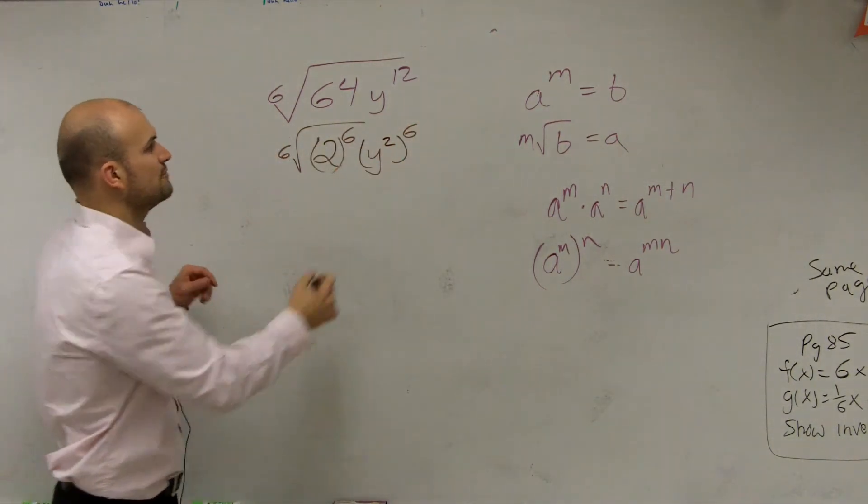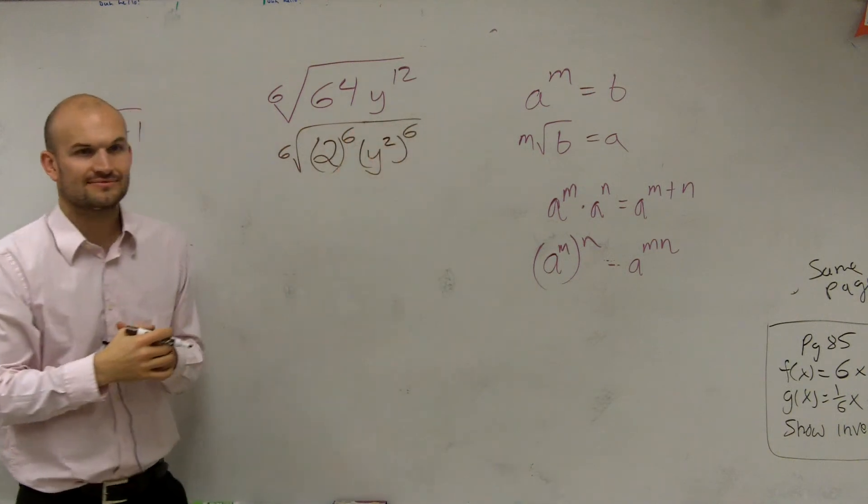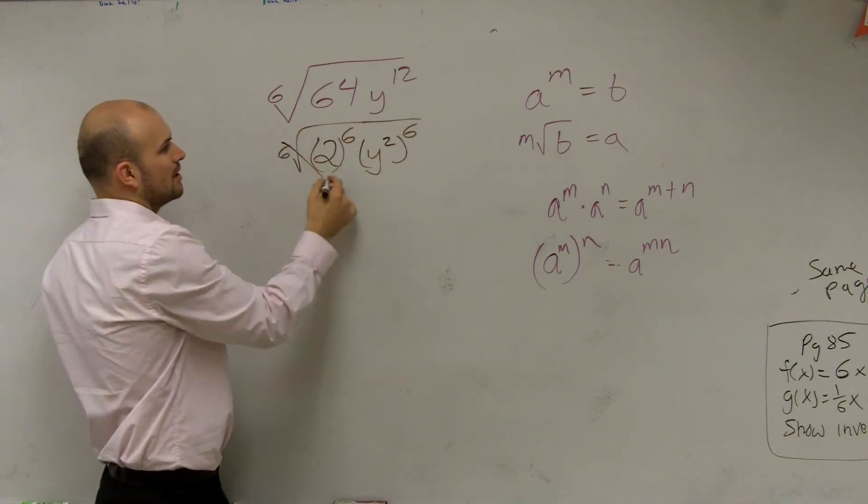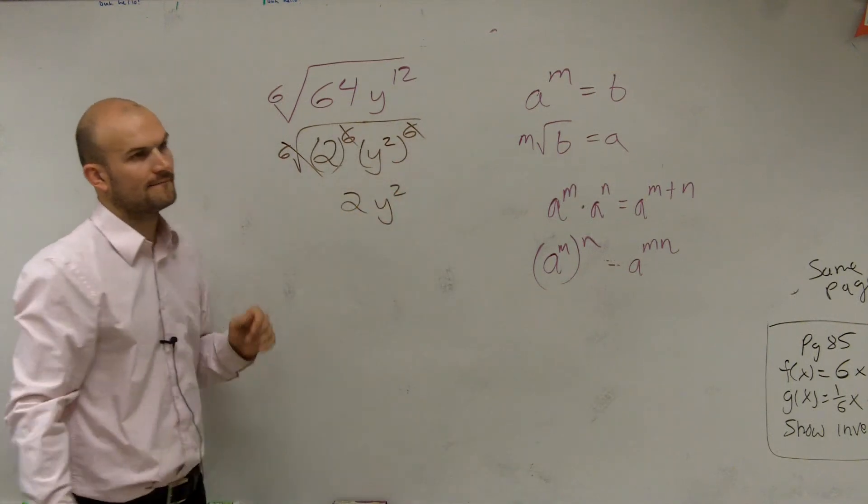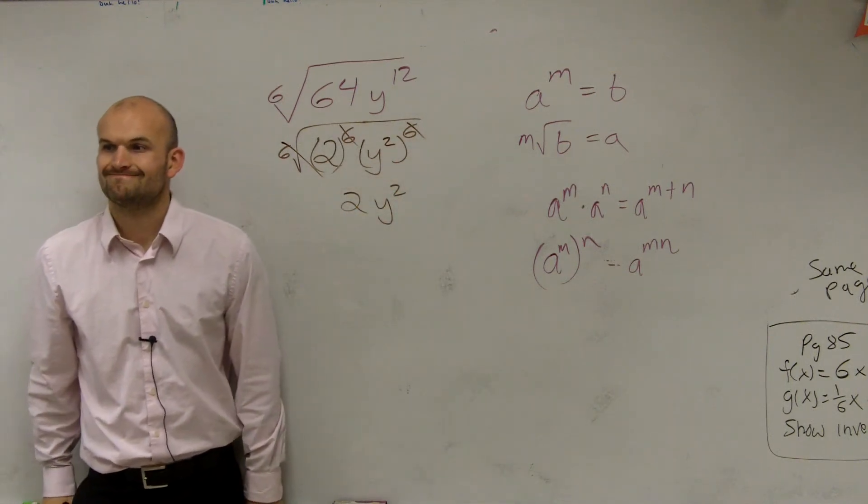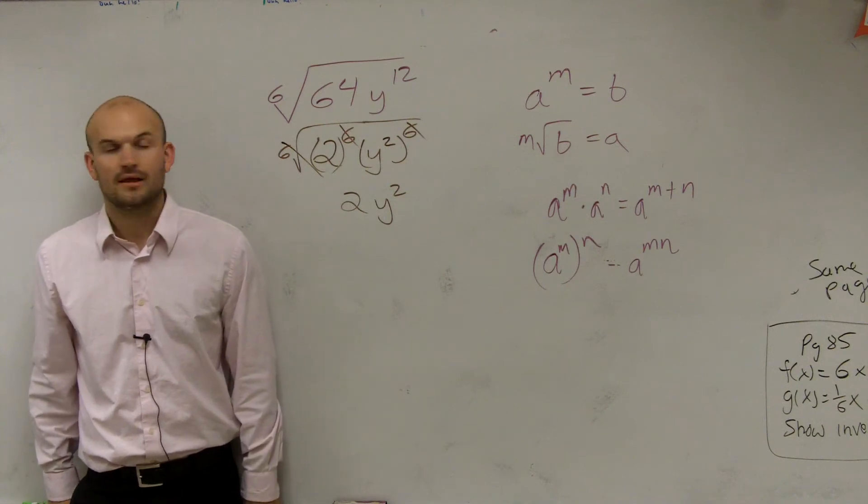Now, since we wrote it in that format, guess what? We can cancel our radicals, and we're left with 2y squared. All right?